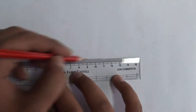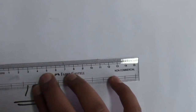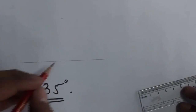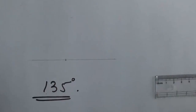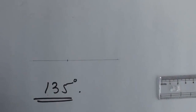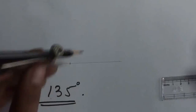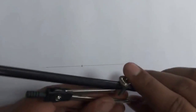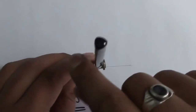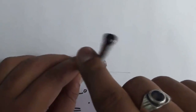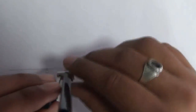135° is right between 120° and 150°, so from this point, first we have to make 150° and then bisect the angle between 120° and 150°.